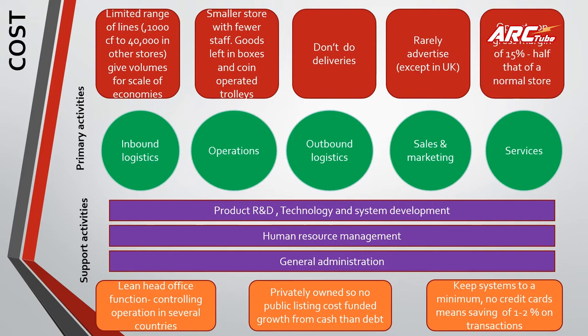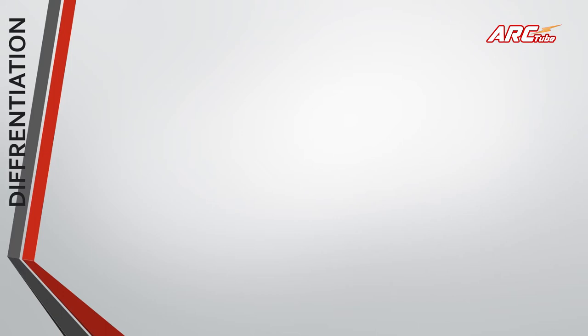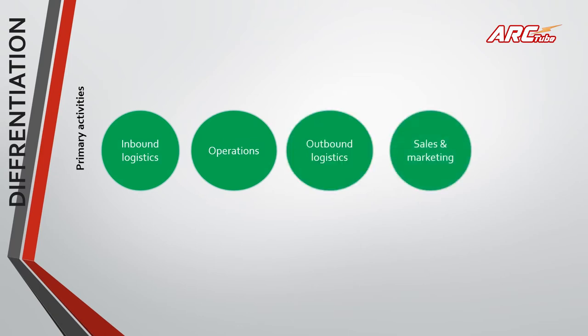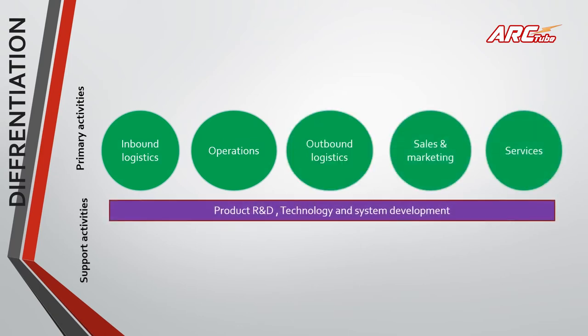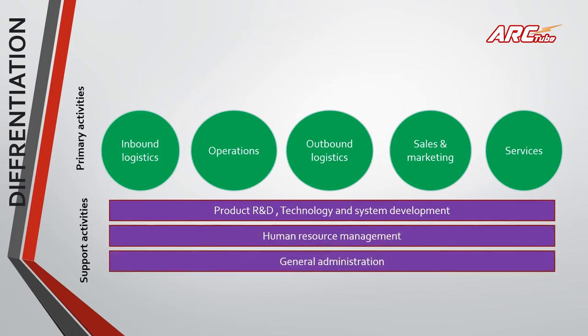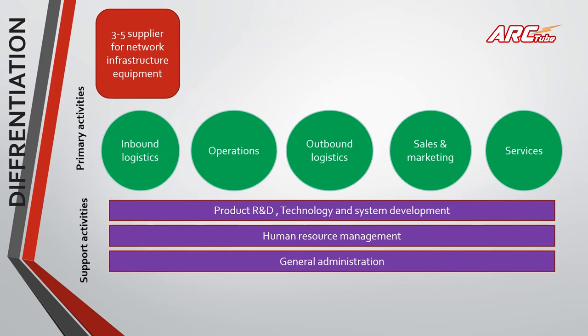Now we are going to discuss differentiation, taking Apple as our example. It again covers primary activities and support activities — from inbound logistics to services, then R&D, technology system development, and general administration. For inbound logistics, Apple focuses on three to five suppliers for network and infrastructure equipment, which is how they differentiate themselves. Having fewer, selective suppliers supports differentiation in inbound logistics.